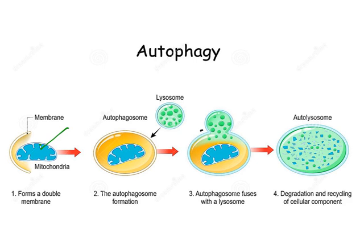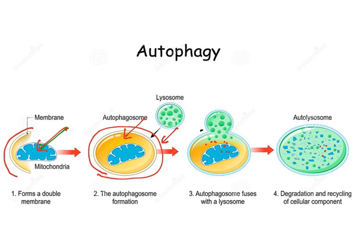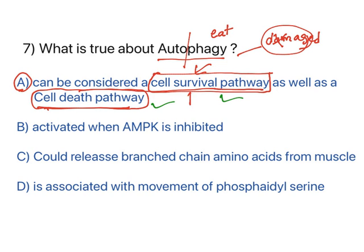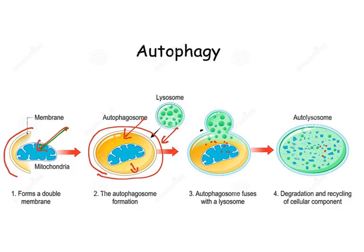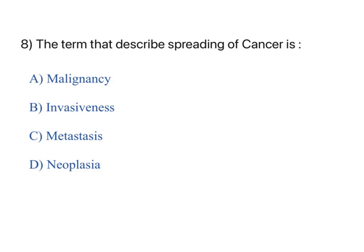In detail: a defective mitochondria is surrounded by a membrane forming an autophagosome, which then attracts a lysosome. The lysosome releases its contents and digests the organelle completely. If the damaged organelle is not removed, it may kill the cell — so autophagy is a cell survival mechanism. However, autophagy can also trigger cell death, making it both pathways.